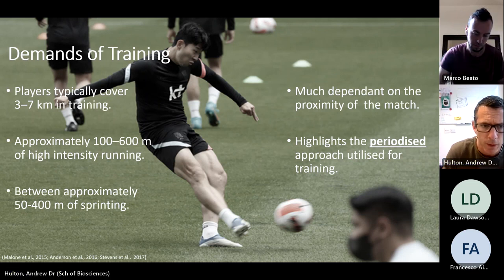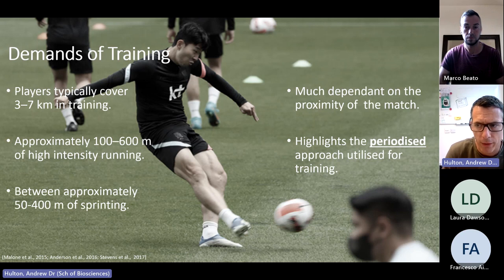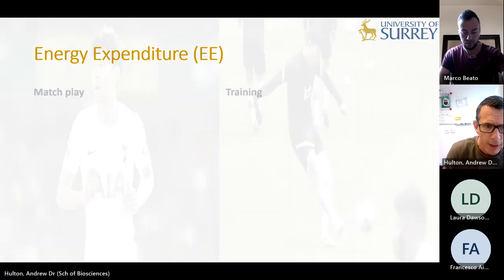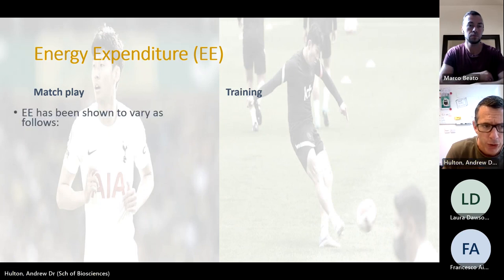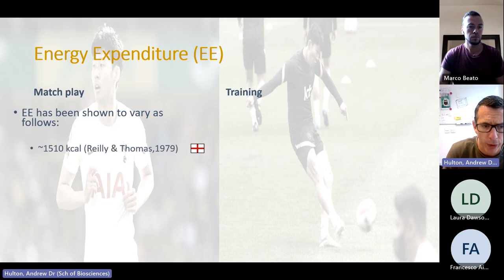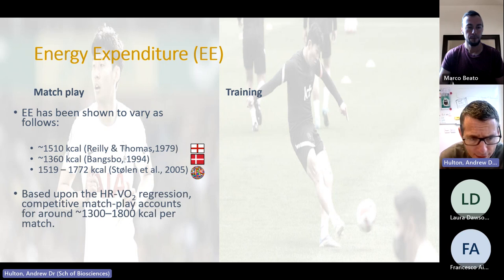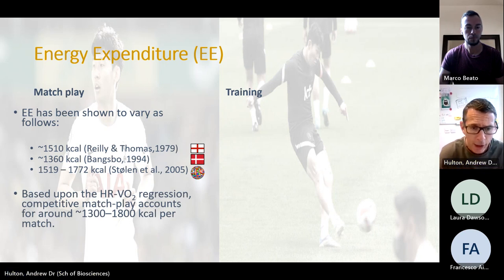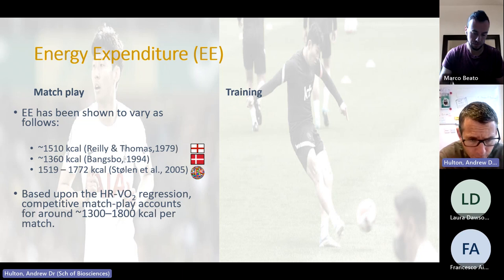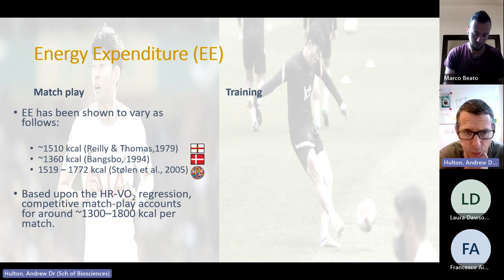Looking at energy expenditure during match play, there's some variation. Early work by Riley and Thomas suggested around 1,500 calories per match, with 1,300 from Bangsbo. The review by Stolen puts it between 1,500 and 1,700 calories. When we group it all together, we're looking at roughly 1,300 to 1,800 calories expended per match.